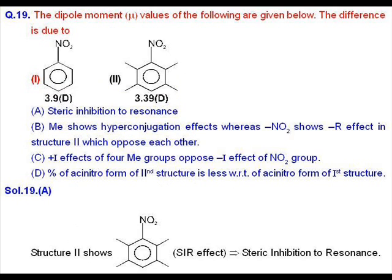Question 19 is based on polarity of compounds. Structure I is more polar than structure II because in structure I, NO2 can exert its -M effect. But in structure II, the methyl groups at ortho positions cause steric inhibition to resonance, so NO2 will be slightly out of plane and cannot exert its -M effect. Therefore, polarity decreases. The answer is option A.